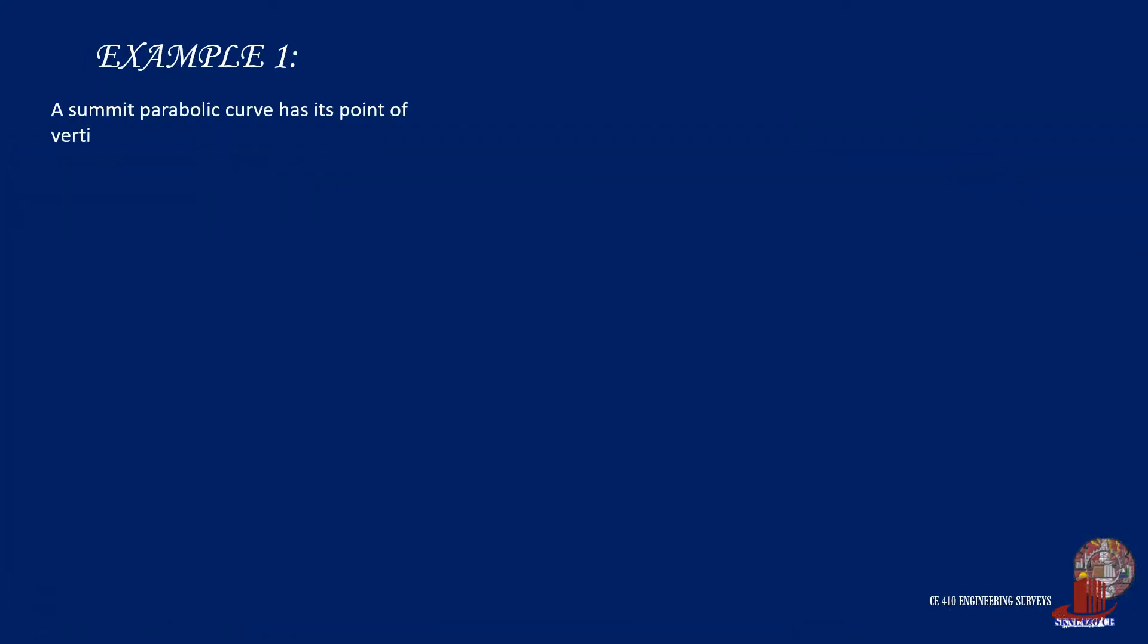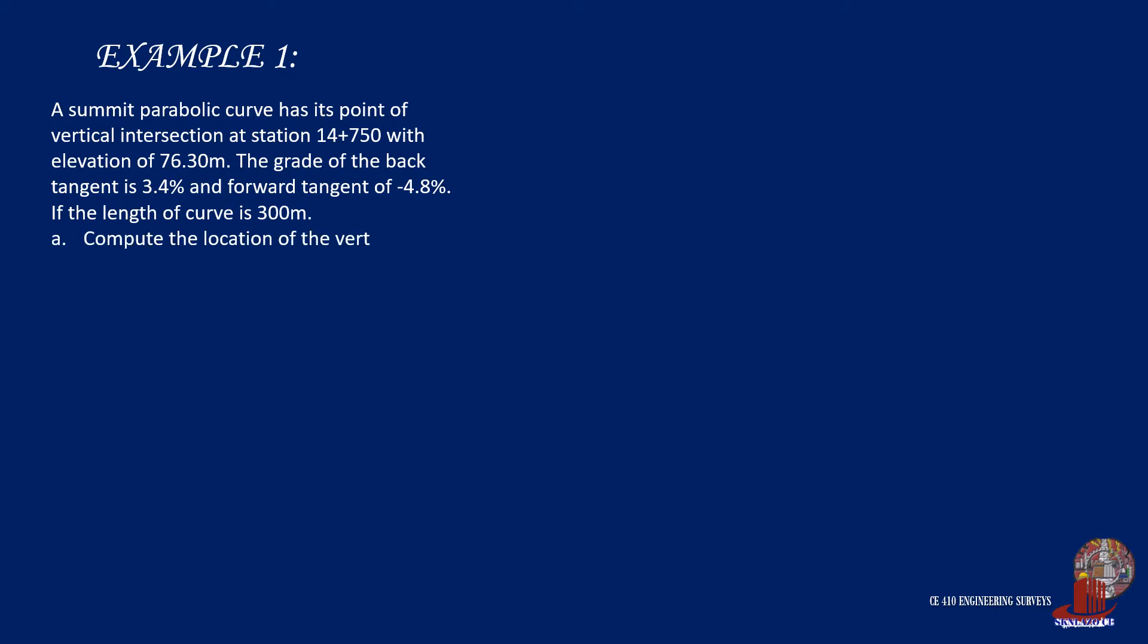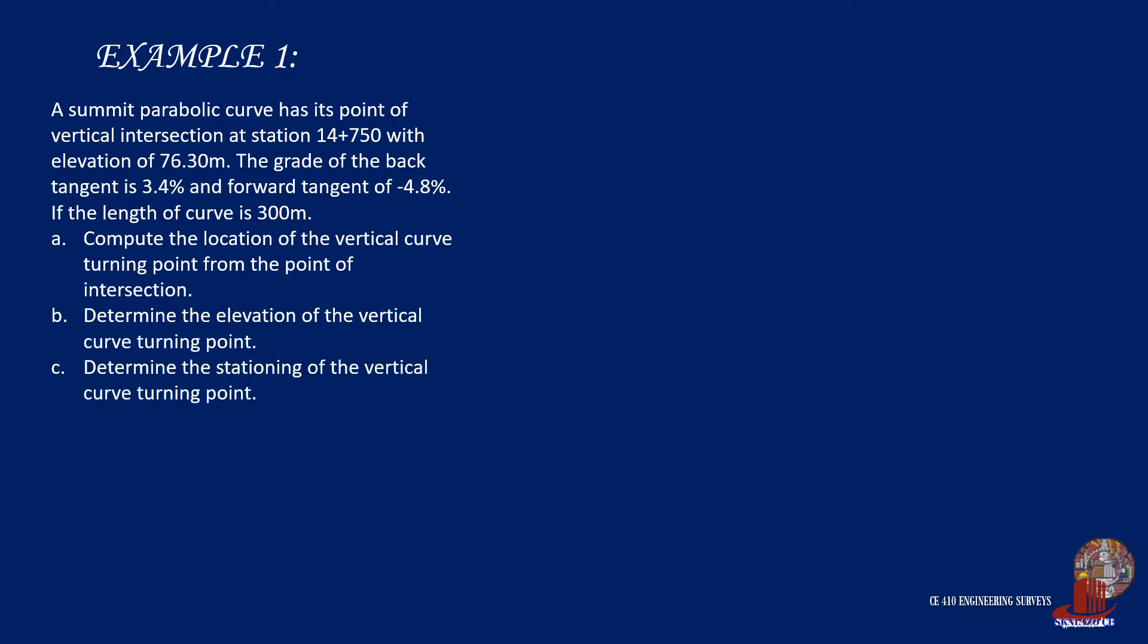Example 1. A summit parabolic curve has its point of vertical intersection at station 14+750 with elevation of 76.3 meters. The grade of the back tangent is 3.4% and forward tangent of negative 4.8%. If the length of the curve is 300 meters: